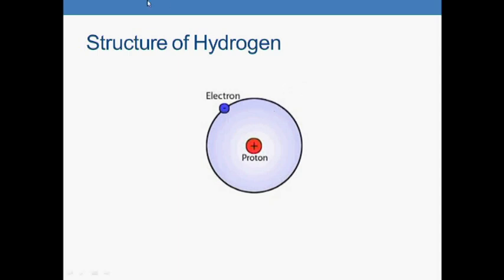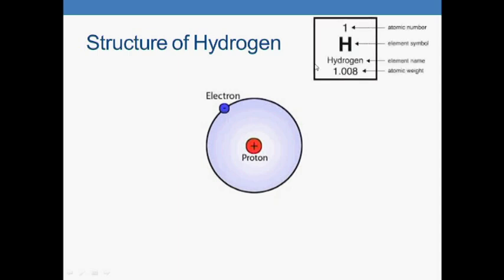Hydrogen has atomic number one. It has one electron and one proton.